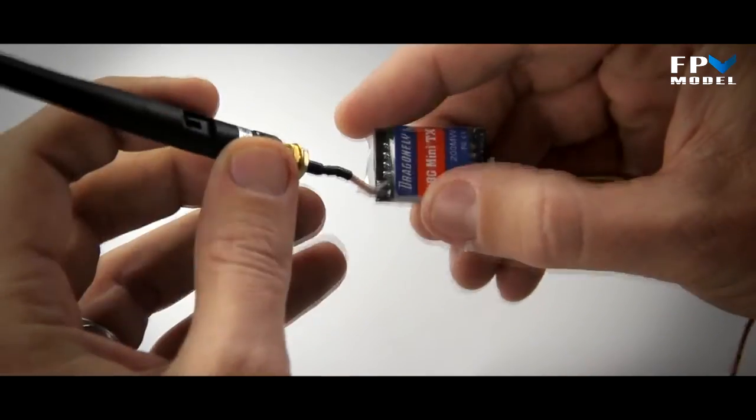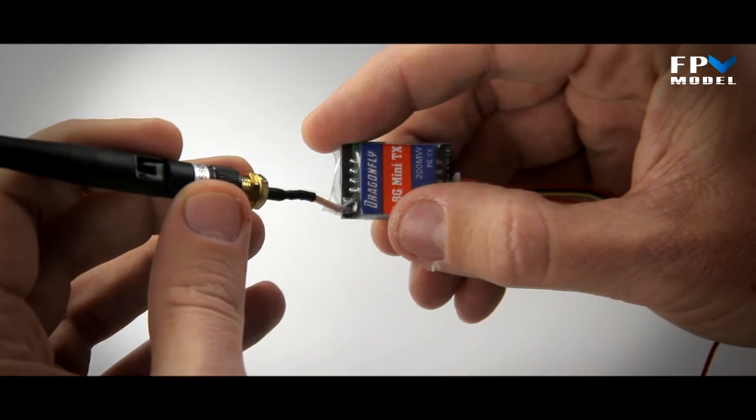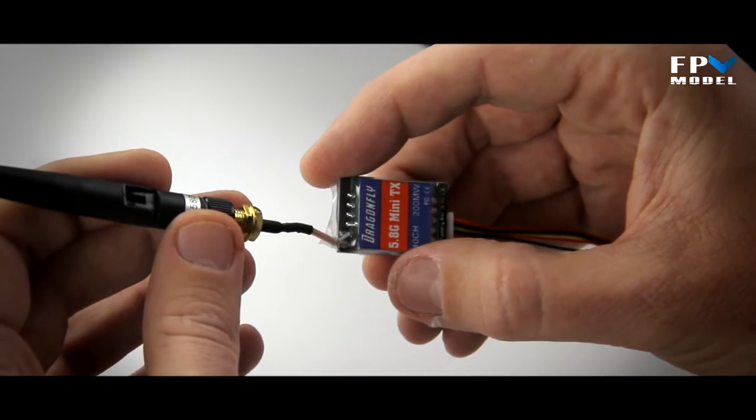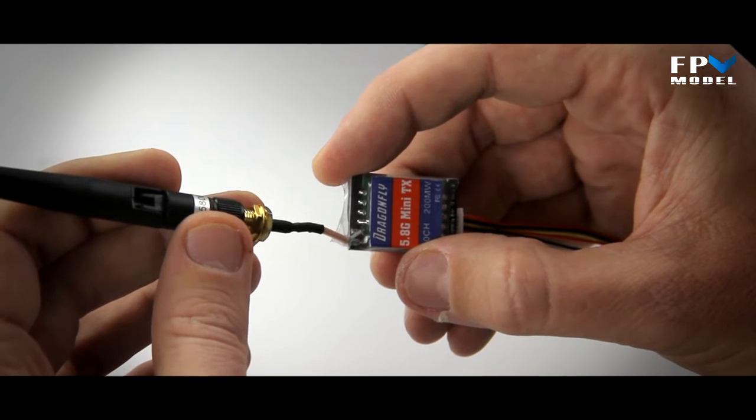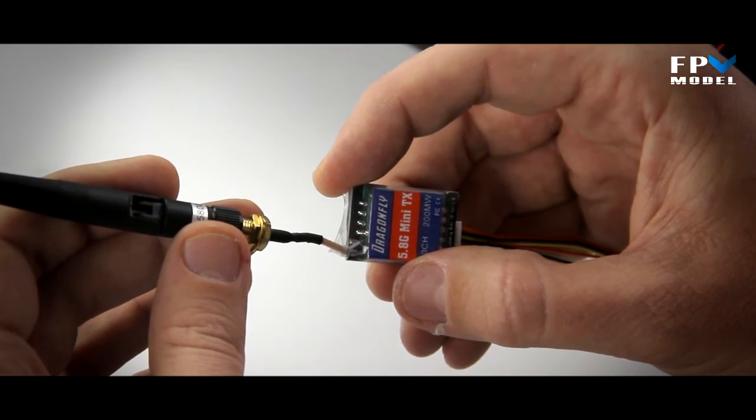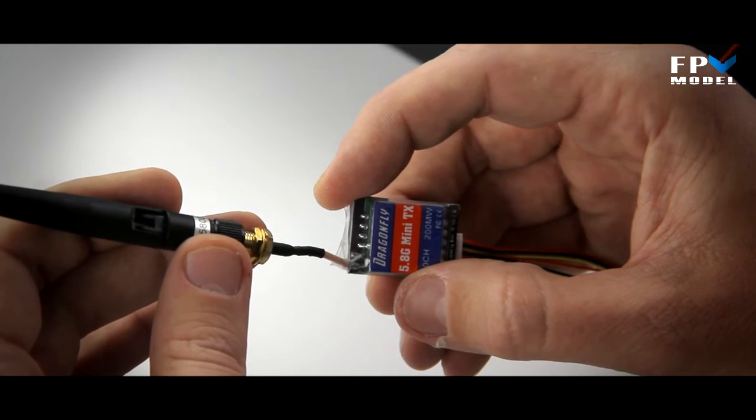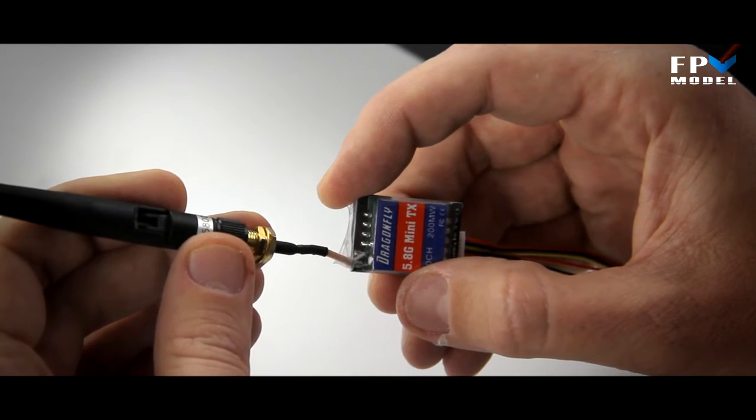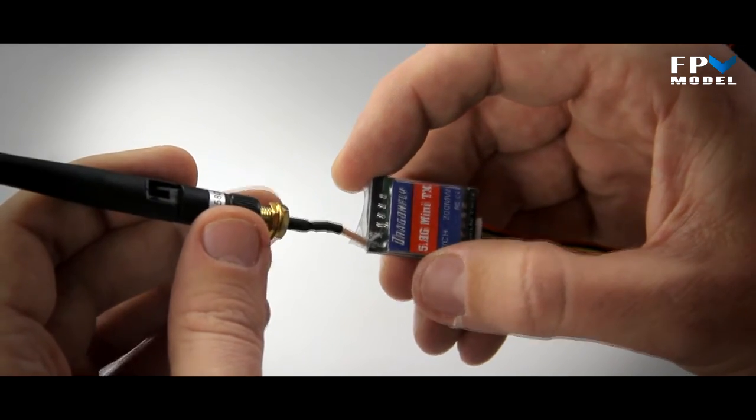So however you want to set it up, you can easily bend your antenna connection. If you want to mount it into a CF plate, you can mount it into a top plate, or if you just want to leave it hanging off the back and put a mushroom antenna on it, you don't have to worry about it being too rigid of a design so you don't break your antennas all the time.